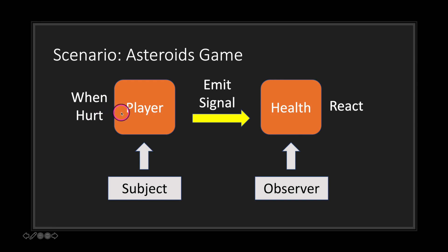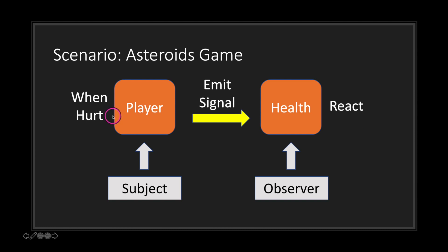When our player gets hurt, we emit a signal to our health script. When the health script receives that signal, it reacts. This is the essence of the observable pattern — when something happens to our subject, we emit a signal to anything that wants to listen. When the observer receives the signal, it reacts by calling a function to act on it.